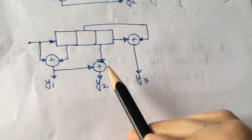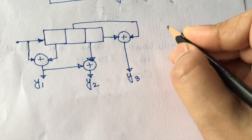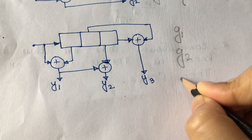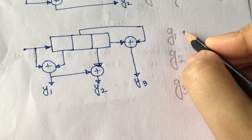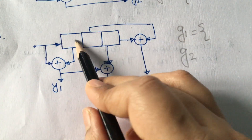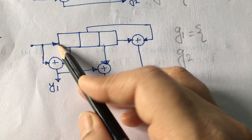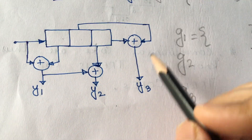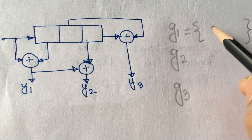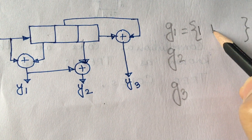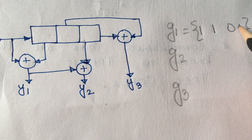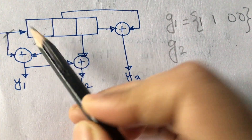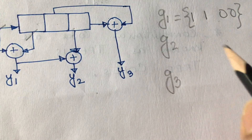For the third encoder structure there are three output bits, so three generator sequences. There are three shift registers plus one incoming bit, so there are four bits for each generator sequence. G1 for Y1: it is only connected between the incoming bit and the first shift register, so G1 is 1, 1, 0, 0.